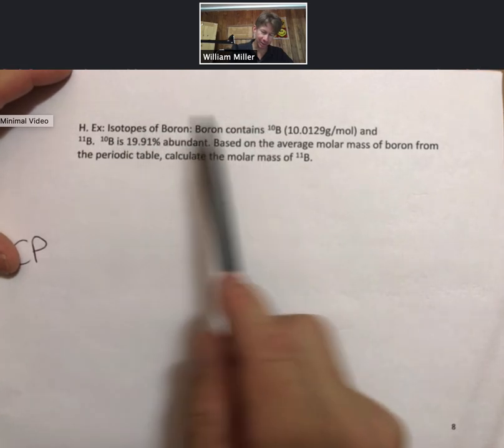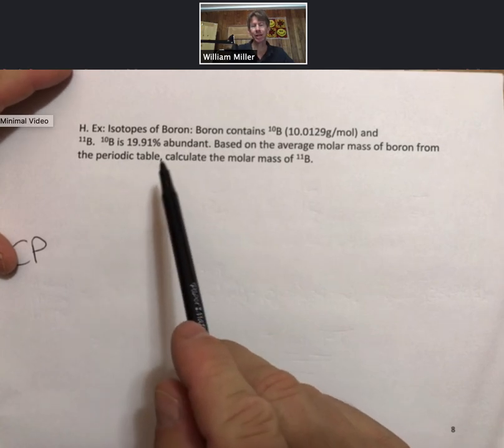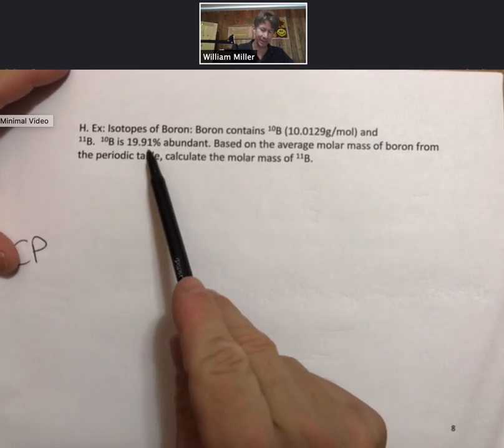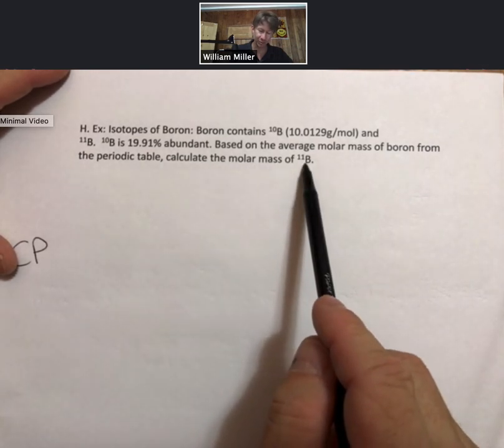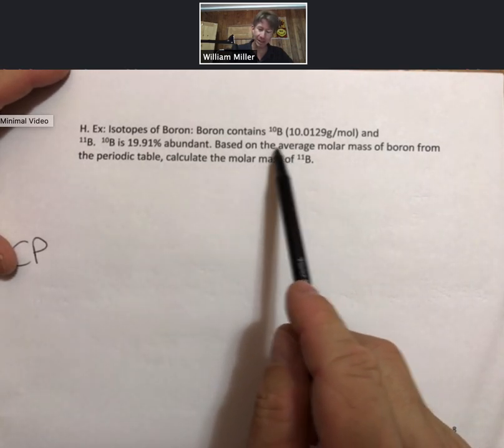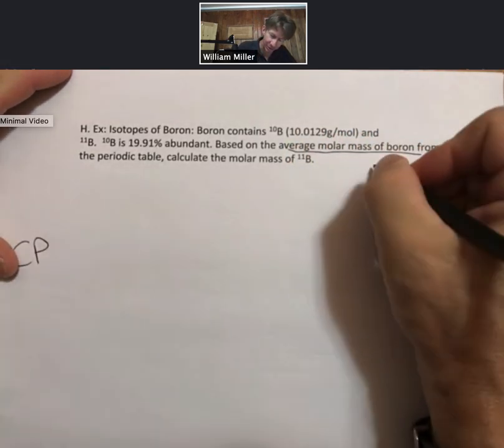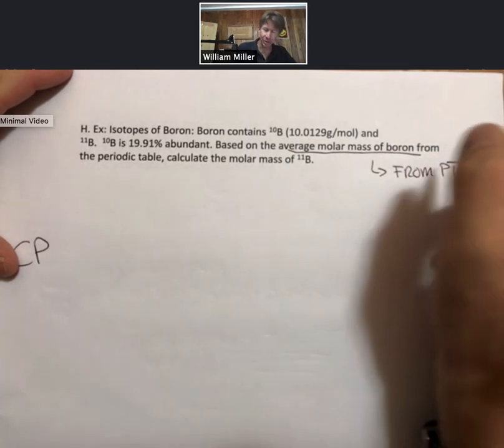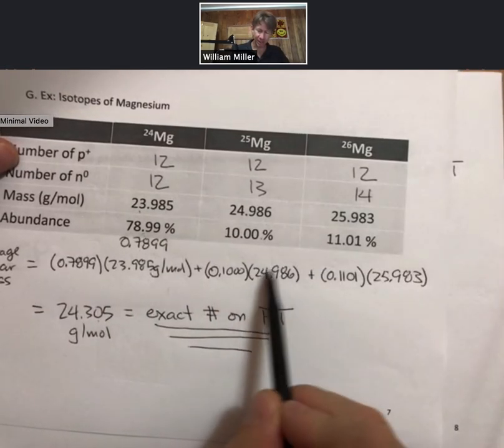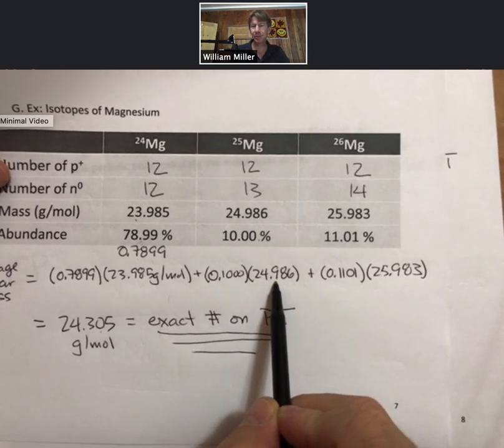Here's a companion problem in which you do a similar thing for boron and the key to this one is that there are only two isotopes. One of them is 19.91% and the other one has to be 100% minus this. Calculate the molar mass of boron-11 based on the average molar mass of boron. So you know the average molar mass of boron from the periodic table. And you can basically back calculate one of your percent, one of your grams per mole. So it's a little different, but it's the same formula.